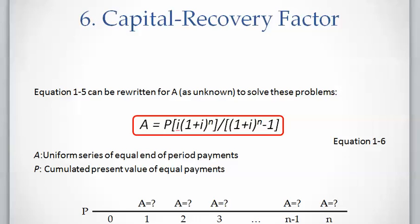The equation to calculate A is straightforward. We just need to rewrite equation one-five for A as the unknown and we will have equation one-six that calculates A from P, i, and n.